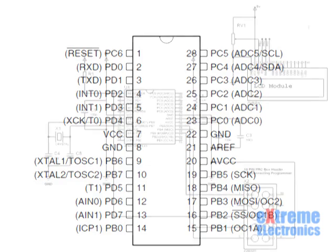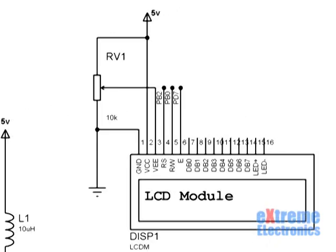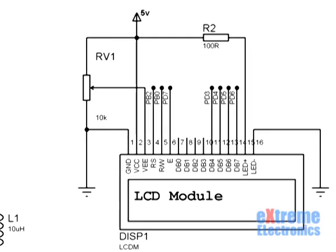Carrying on with the connections: LCD pin 4, the RS pin, is connected to PB2. The RW pin is connected to PB0 and the E pin to PD7. The LCD has eight data lines DB0 to DB7, and there are two interface modes: 4-bit and 8-bit. The 4-bit mode saves four MCU I/O lines. In this mode, the first four data lines are unconnected; DB4 connects to PD3, DB5 to PD4, and so on. The LED backlight pins are then connected accordingly.